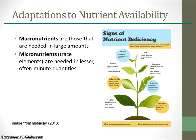Plants exhibit adaptations to variations in nutrient availability. Plants require a variety of chemical elements or nutrients to carry out metabolic processes, and the availability of nutrients has direct effects on plant survival, growth, and reproduction. There are two broad categories of nutrients: macronutrients and micronutrients. Macronutrients are those needed in large amounts; Smith and Smith identify nine macronutrients: carbon, hydrogen, oxygen, nitrogen, calcium, phosphorus, magnesium, sulfur, and potassium.